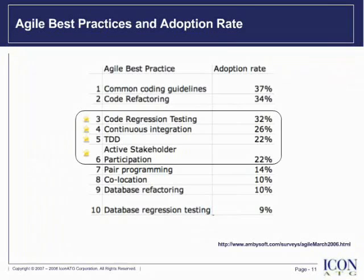Code Regression Testing. If your team is conducting two-week or four-week iterations, but it takes two weeks for QA to conduct a regression test, it will impact their velocity. Look to automate as much testing as possible. Regression testing can be used to not only test the correctness of the software, but it can also be used to track the quality of its output.